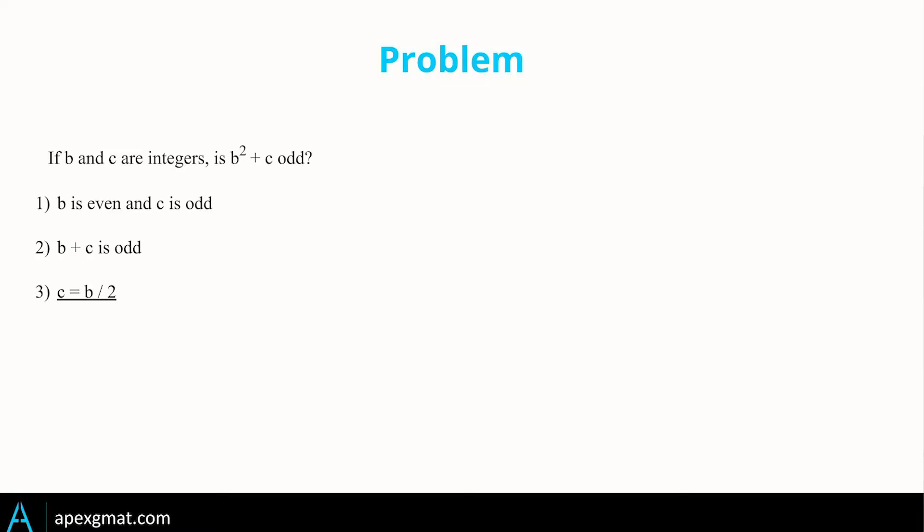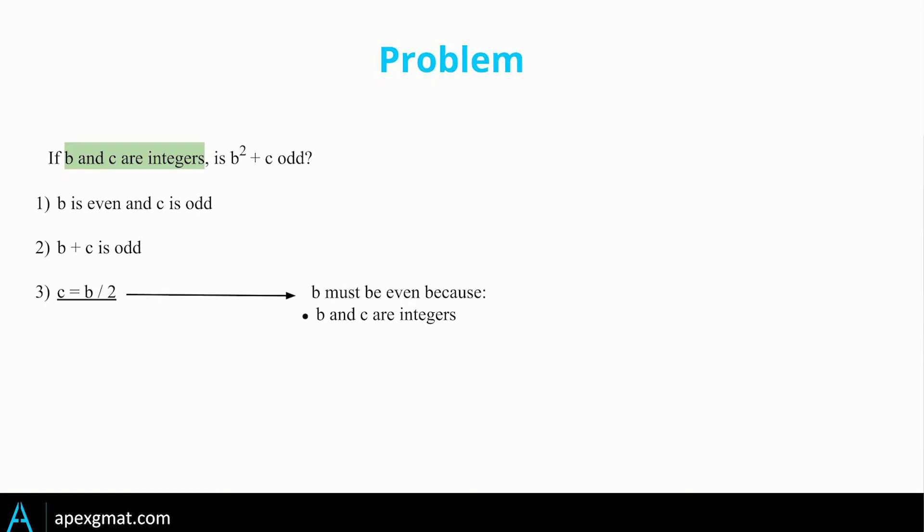I want to put up a third piece of information, which is a really useful self-prep exercise: look at a data sufficiency problem and postulate what other piece of information the GMAT might give us with some subtlety, to induce an incorrect answer by modulating complexity in the introduced information rather than the question stem. Here we have c = b/2. What this means is b must be even — take a minute to think about that. We can't know anything about c, but b must be even because they're integers and b can be divided into two.